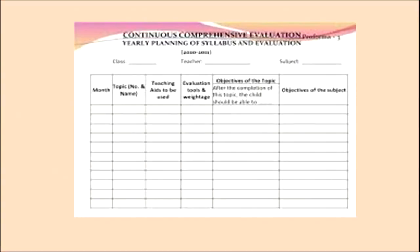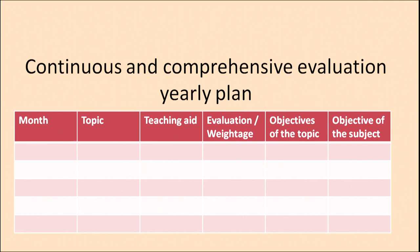Now, one format taken from the net is from Kendriya Vidyalaya, given for continuous and comprehensive evaluation. They have made six columns: the first column is of month, second is of topic, third is of teaching aid, fourth is of evaluation and weightage, fifth is of objective of the topic, and the last one is objective of the subject. But you are not bound to make your yearly plan from this format — you can make it any way you choose. As creative as you are, as interesting and creative your yearly plan can be.